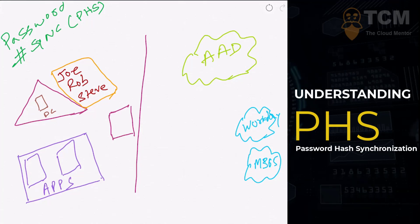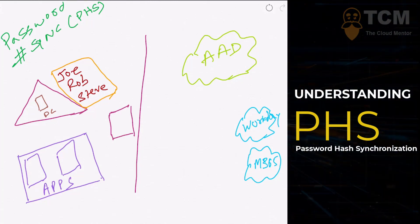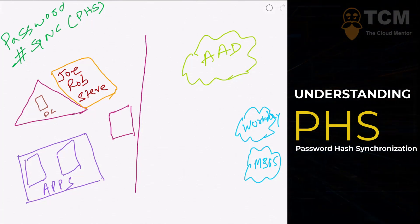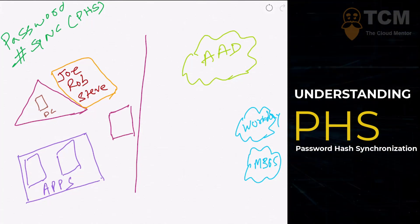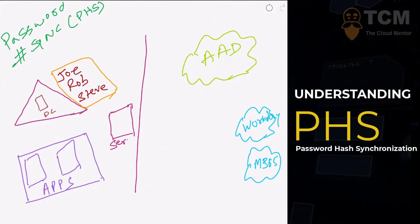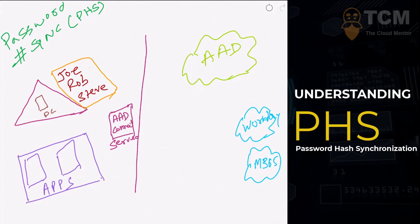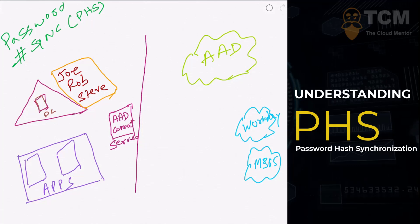You can install Azure AD Connect on a DC in a test environment if you want to see how password hash sync works, but on production environments it's not recommended. For that purpose you should have a separate server — call it the Azure Active Directory Connect server. On a side note, treat this server like a domain controller and protect and secure it accordingly.